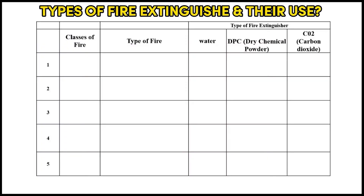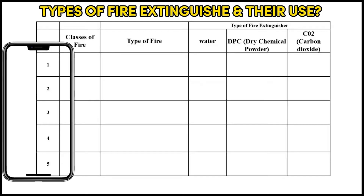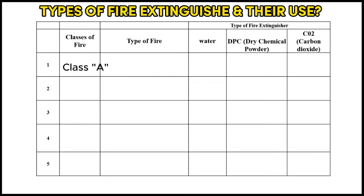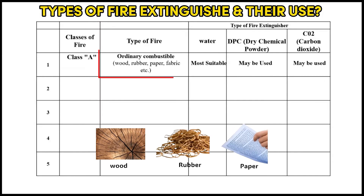Here we will make a table for better understanding of types of fire extinguishers and their use. There are five classes of fire: Class A, Class B, Class C, Class D, and Class E.